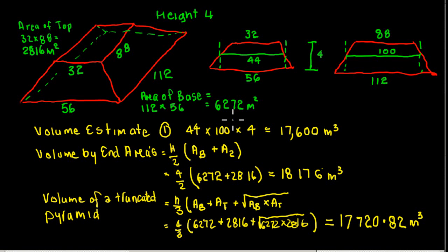So here as you see we've got the average area, the areas in there, the height's 4 divided by 2, and that gives us a volume of 18,176 cubic meters. So that's slightly different, a slightly higher one.